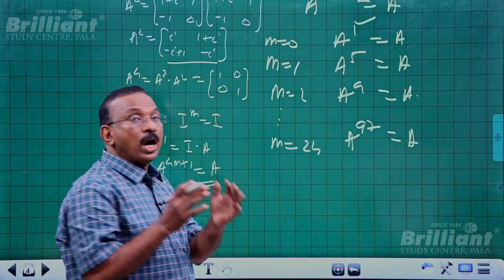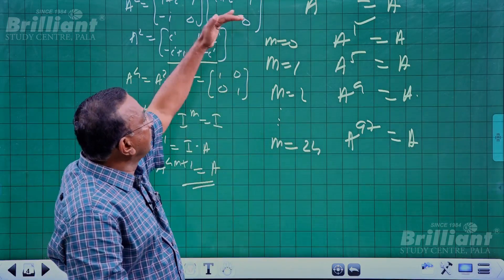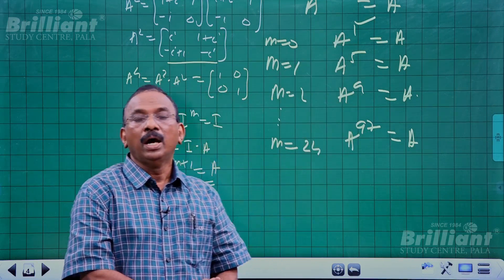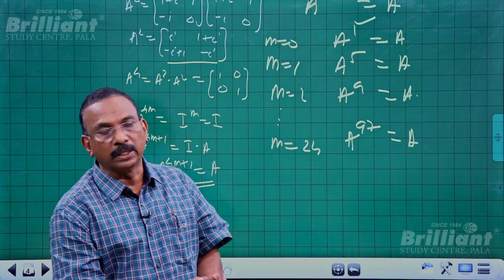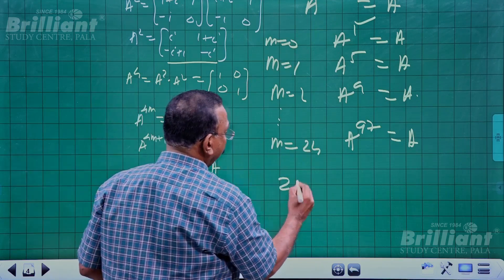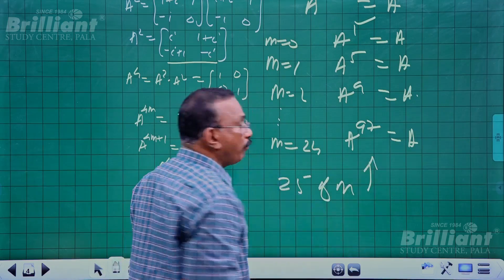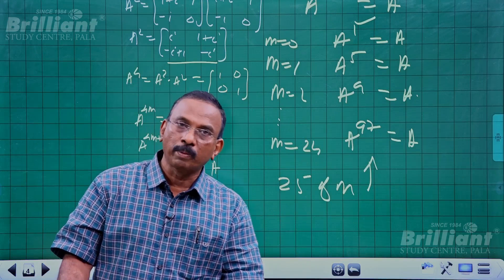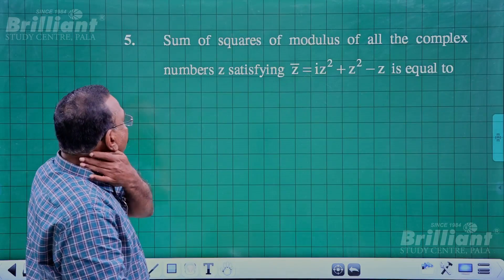Including m = 0 through m = 24, there are 25 values of m, giving 25 values of n. So the answer to this problem is 25.